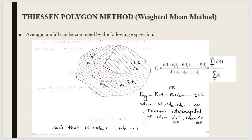To construct the Thiessen polygons, first we join all adjacent rain gauge stations: A to B, B to C, C to D, and D to A, forming a polygon. The next step is to construct the perpendicular bisectors of each of these lines. For the AB line, we draw a perpendicular bisector; similarly for BC, CD, and DA.